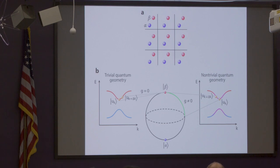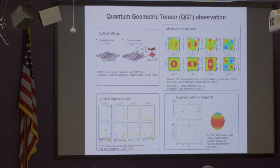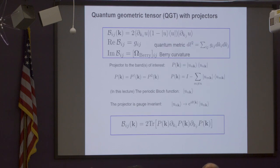So now you know what quantum metric is. People got interested in it only recently — by now there are only a few realizations where people have experimentally measured it, but you can measure it in the same manner that you can measure Berry curvature. Even in my group, because my group is also doing experiments in photonic systems, we have measured it — but I will not talk about this today.